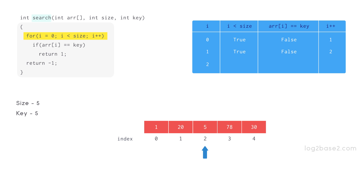Now 2 is less than 5 so the condition is true. So compare 5 and 5 — the comparison returns true. It will come out of the for loop and returns 1, and the search is found.